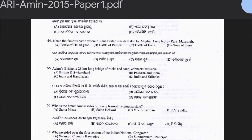Question 54: Name the famous battle where Rana Pratap was defeated by the Mughal Army led by Raja Man Singh. Options: Battle of Haldighati, Battle of Panipat, Battle of Buxar, or none of these. The answer is option A — Battle of Haldighati. Raja Man Singh was a Hindu king who served as a general in the Mughal Army.